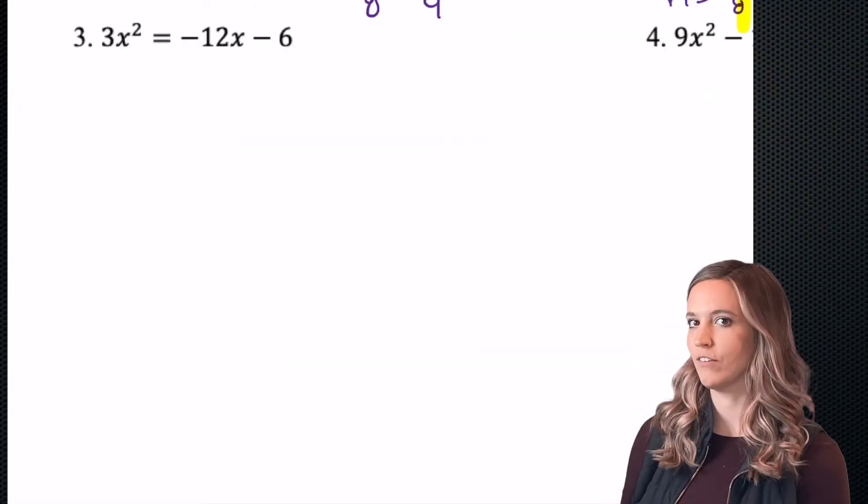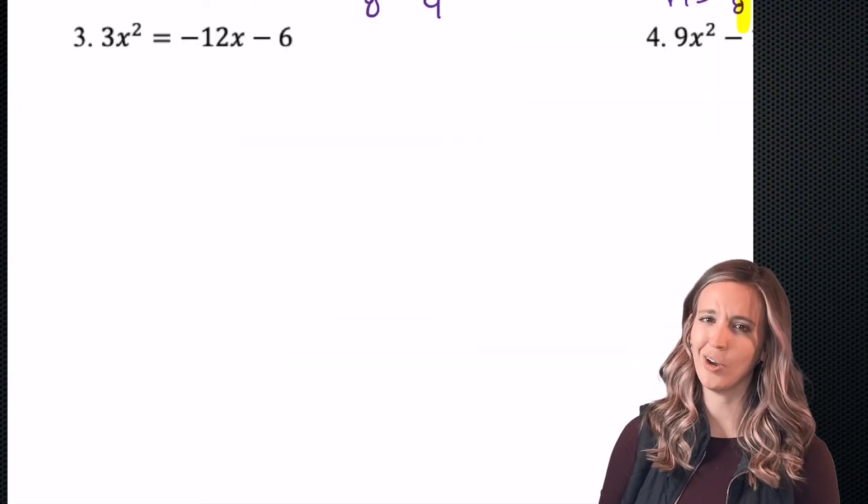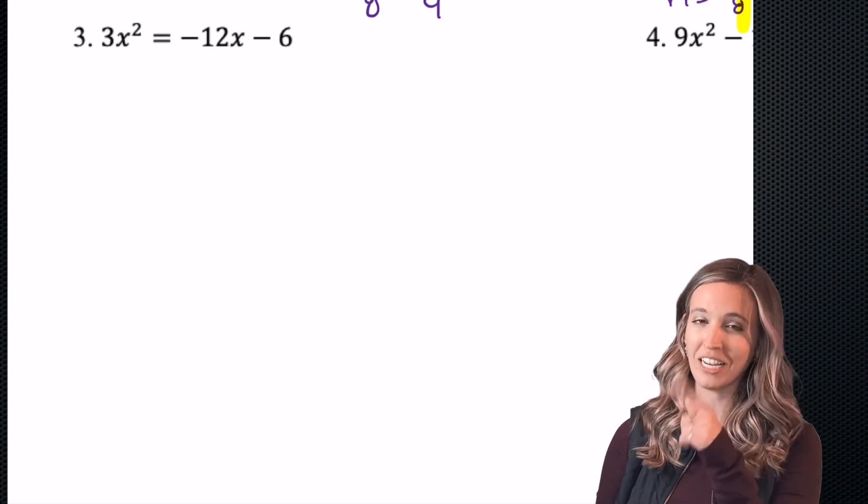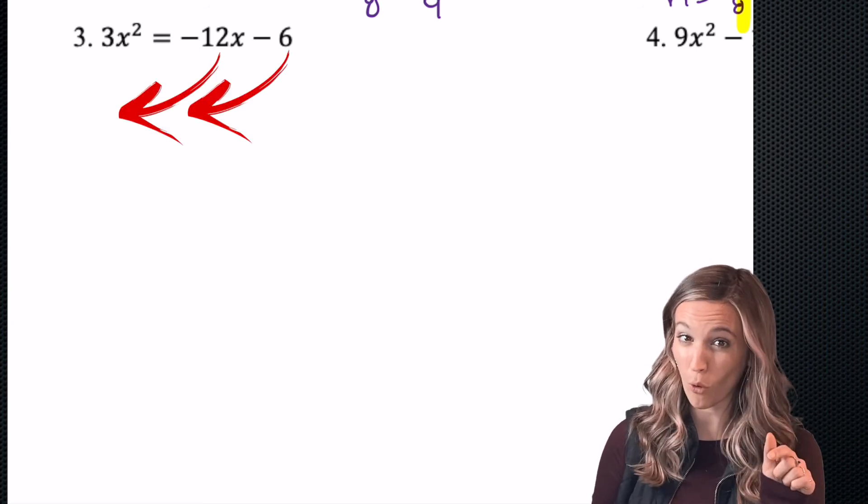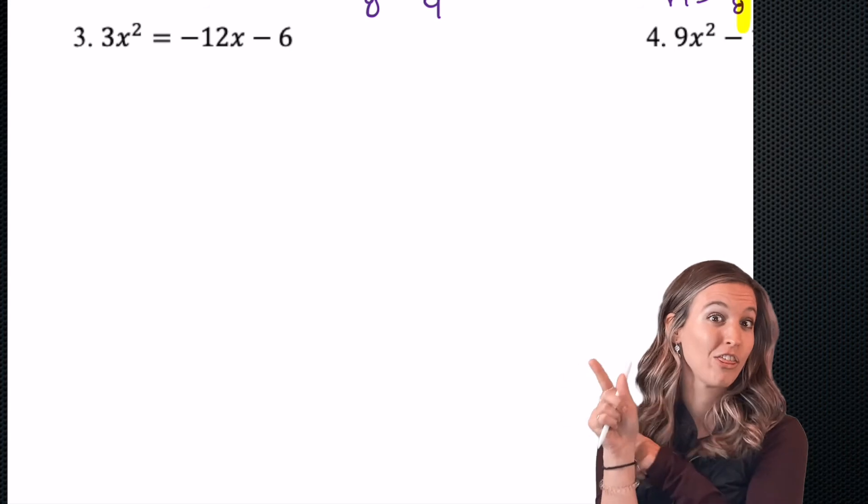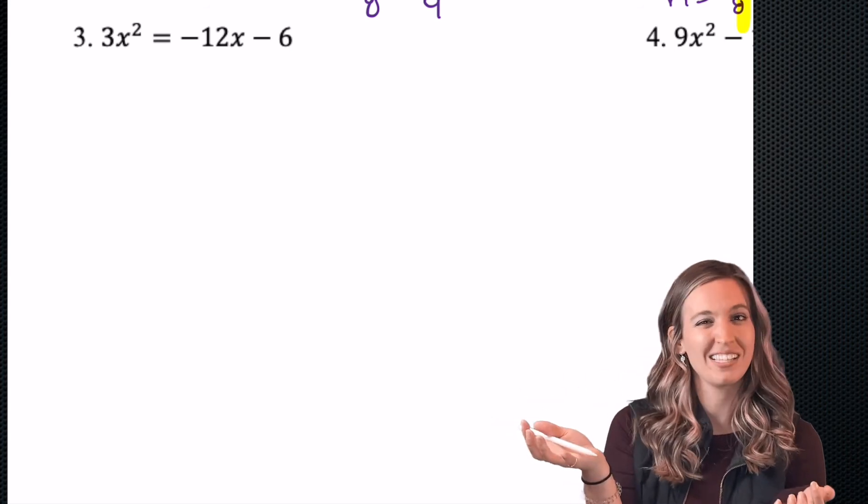Okay, time for 3. First we got to make sure we set it equal to 0, and I'm going to be a little smart about it and move my 12x and my 6 over instead of moving my 3x squared over. I'd rather have a positive a than a negative a.